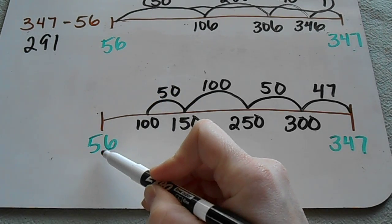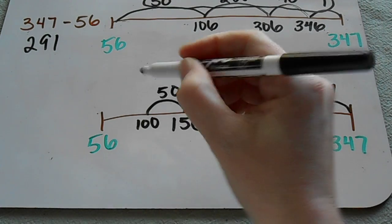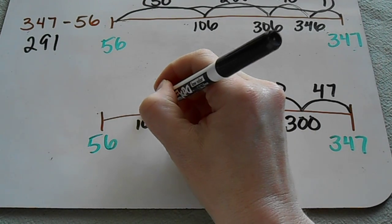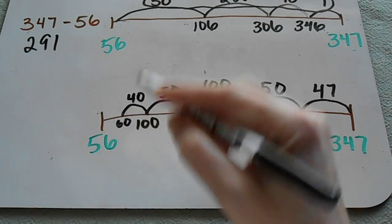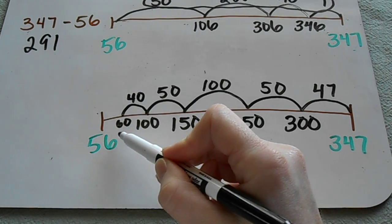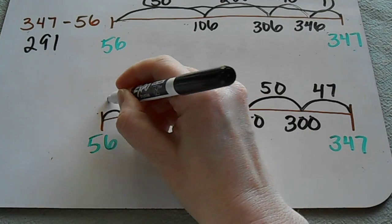Then I'm going to jump down another 50 units to get to 100. And now I can see that I'm quickly approaching 56. If I jump down another 40 units, that puts me at 60. And then I know the difference between 60 and 56 is only 4 units.